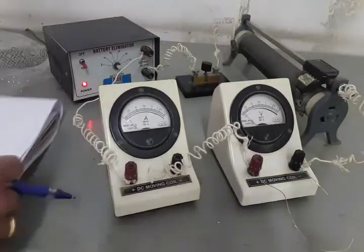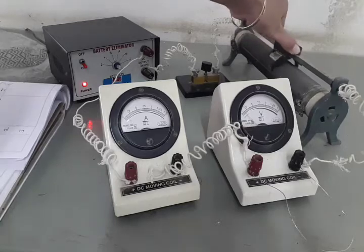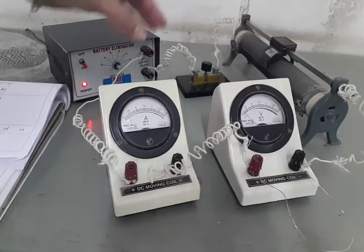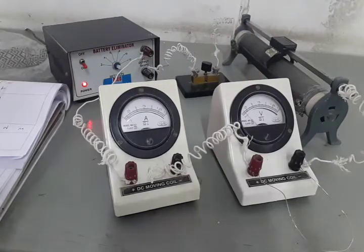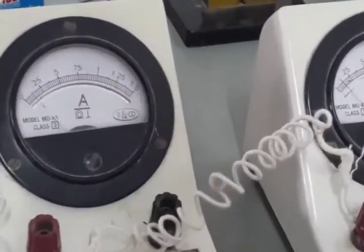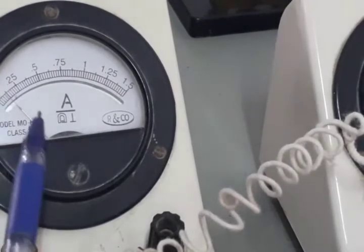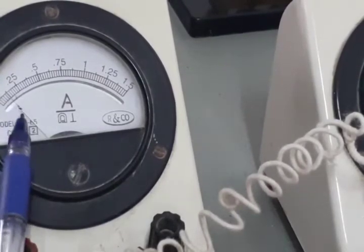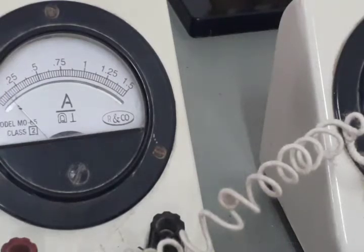Then we have to shift this slider. Suppose at this position, as soon as we shift it, the readings in the ammeter and voltmeter will change. You can see that here the pointer is this one. It is showing some divisions. So these divisions we have to count every time.